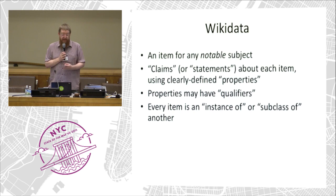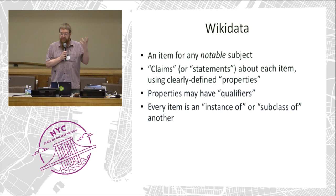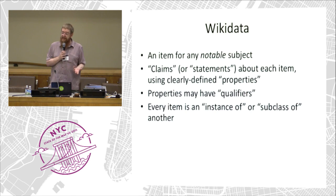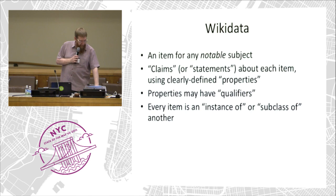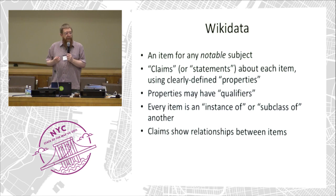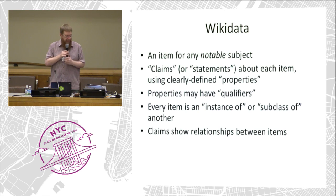Every item in Wikidata is either an instance of something — so this building is an instance of a building — or it's a subclass of something. A Boeing 747 is a subclass of a jet aeroplane, because we're not talking about an individual 747, we're talking about the class of 747s. Everything is either one thing or the other, and it's worth knowing that as you use Wikidata. The claims can also show relationships between items — so when we say this building is occupied by the United Nations, the United Nations is also an item, and we build a relationship between the two.